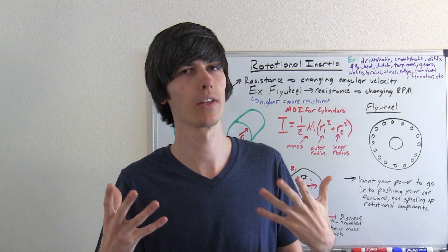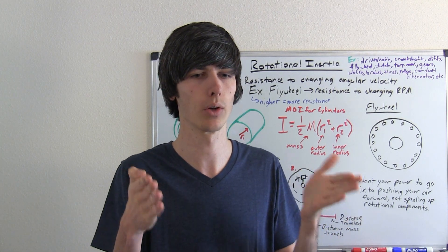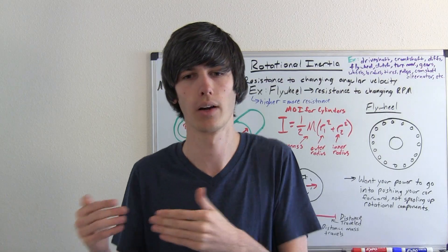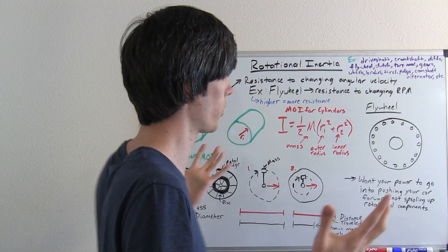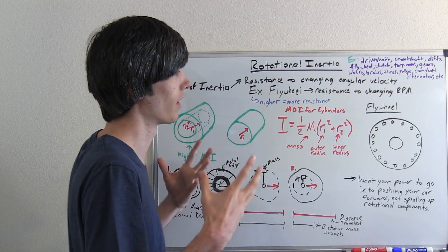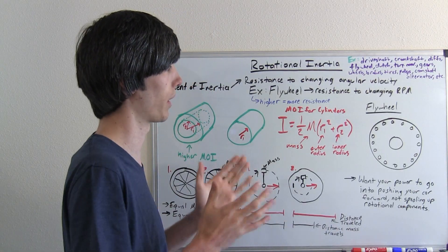By reducing the amount of power you put into rotating components, you can therefore increase the force on the ground and your car will accelerate faster. You're increasing your horsepower by decreasing your losses, basically.